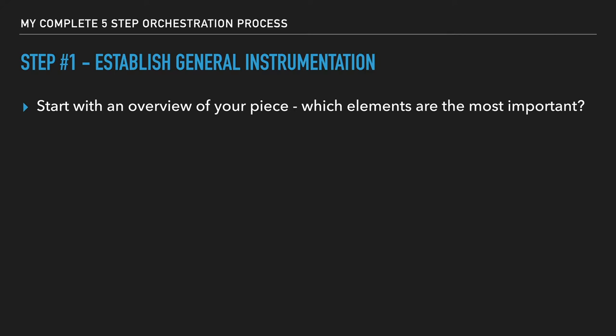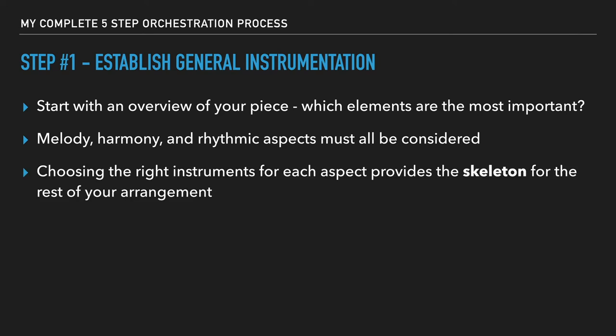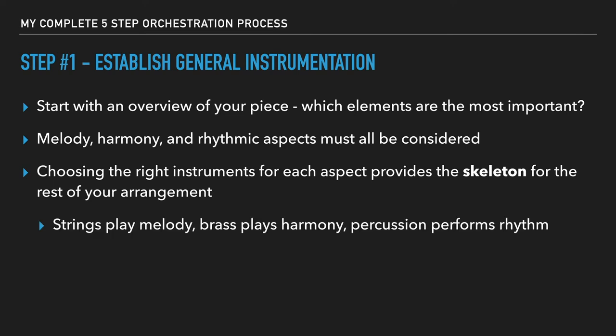Starting with an overview of our piece of music: which elements are the most important? Is the melody the most important? Is it the harmony? Is it the groove? Whichever element is the most important, you want to start assigning instruments to that part first. All of these elements — melody, harmony, and rhythm — have to be considered. Choosing the right instruments for each aspect provides the skeleton or the basis for the rest of your arrangement. For example, if your melody is the most important thing and you assign a violin section to it — violins one and two — then the violins are already taking care of the melody, which probably means you're going to use the rest of the orchestra to harmonize or accompany that melody. So the strings play melody, the brass or woodwinds can play the harmony, and the percussion performs the rhythm.